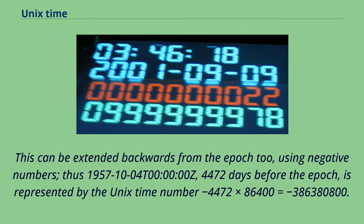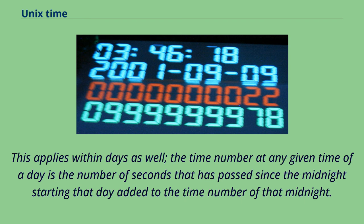This can be extended backwards from the epoch using negative numbers. Thus 1957-10-04T00:00:00Z, which is 4,472 days before the epoch, is represented by the Unix time number −4,472 × 86,400 = −386,380,800. This applies within days as well. The time number at any given time of a day is the number of seconds that have passed since the midnight starting that day, added to the time number of that midnight.